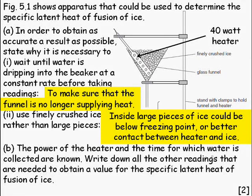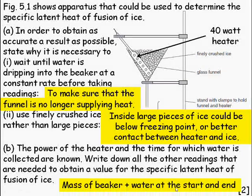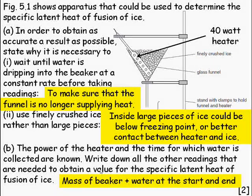Part B, the power of the heater and the timer known. Write down all the other readings that need to be obtained to get a value for specific latent heat of fusion of ice. So we need to know the mass of the beaker and the water at the start and at the end. So you can subtract the two and find the mass of ice changed into water.